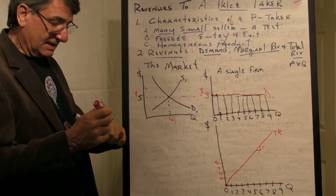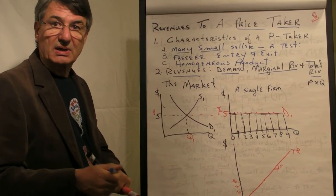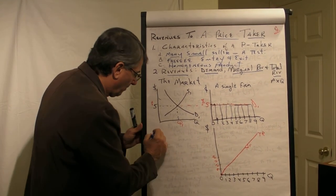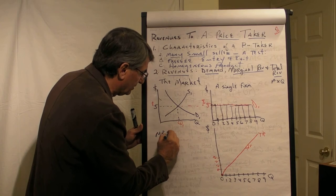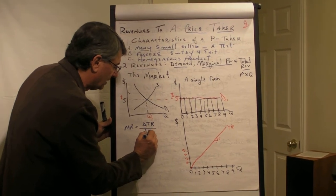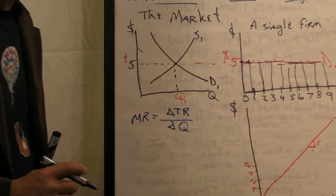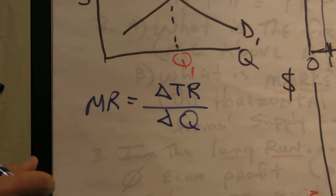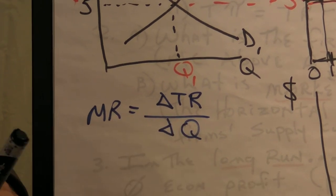Now, the last little bit to deal with, of course, is marginal revenue. Marginal revenue is equal to the change in total revenue divided by the change in the quantity produced and sold. So in words, this is the formula, but in words,